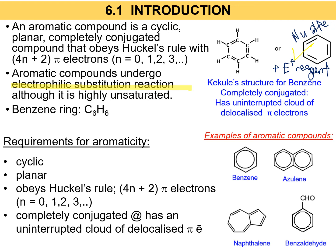Here are some examples of aromatic compounds. This is benzene. Then there is azulene, which is formed when two benzene rings are combined — naphthalene. And lastly, benzaldehyde, which is when a benzene ring has an aldehyde functional group (C double bond O, H) attached to it. Do you remember that CHO is the abbreviation for C double bond O H?